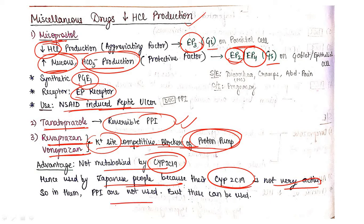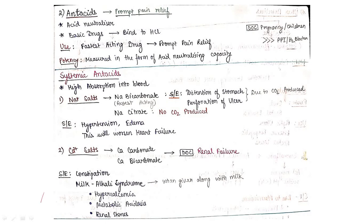Now what are the side effects with misoprostol? Diarrhea will be most common, and cramps or abdominal pain may also occur. This misoprostol is contraindicated in pregnancy. Remember this: misoprostol is absolutely contraindicated in pregnancy. Then we can also give antacids which will give pain relief. Basically they are acid neutralizers. They are basic drugs which will bind to HCl and neutralize that. These are faster-acting drugs, so it will give you relief from pain. This is drug of choice in pregnancy or in case of children, because in pregnancy and children we usually do not give PPI or H2 blocker.